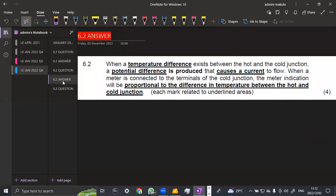When the temperature difference exists between the hot and the cold junction, a potential difference is produced. That causes a current to flow when a meter is connected to the terminals of the cold junction. The meter indication will be proportional to the difference in temperature between the hot and cold junction.